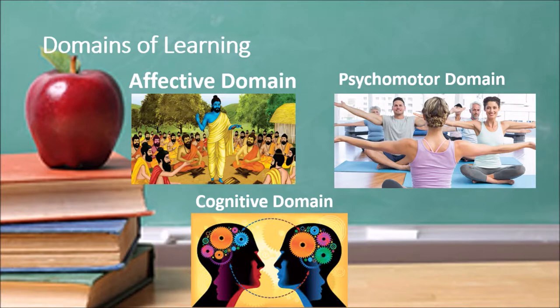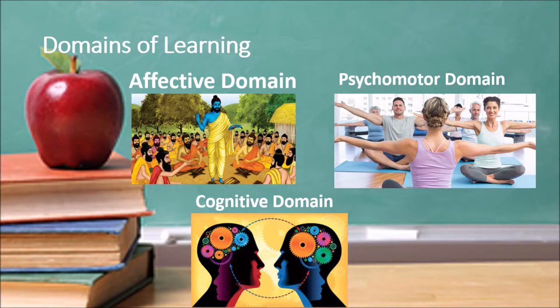Based on the knowledge they have, they will work accordingly. Next is the psychomotor domain, where learners actively learn by doing things with the teacher. Next is the cognitive domain, where the thought processes of the teacher and learners run in parallel and they communicate with each other.